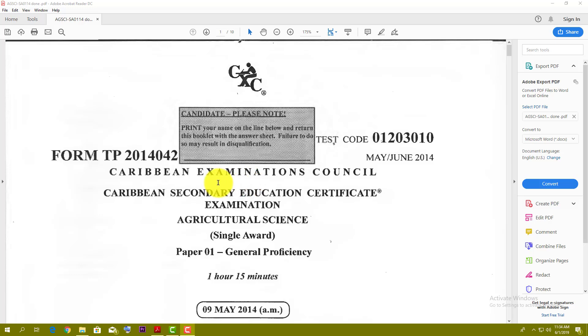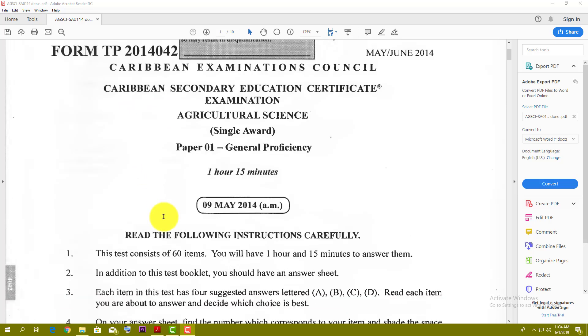Today we're going to be looking at the May-June 2014 Agricultural Science Single Award Paper 1 for CSEC. That's the May-June 2014 Single Award Agricultural Science Paper 1 for CSEC. Let's just jump right into it.